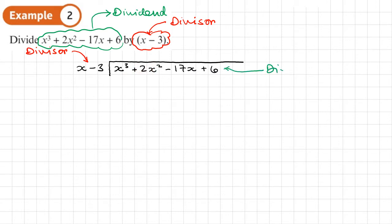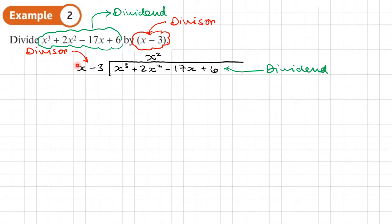Now let's go through the procedure. The first step is to look at the first term of the divisor and ask how many times it goes into the first term of the dividend. How many times does X go into X cubed? It goes X squared times, because X times X squared is X cubed. I'll write X squared above the X squared column to keep everything lined up.